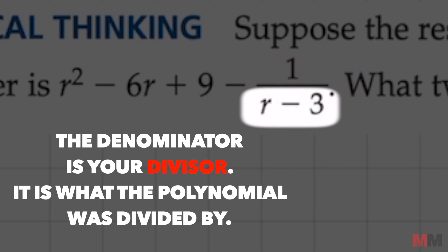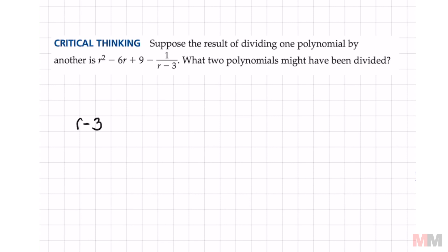So that's actually one of the answers that usually goes outside right here when you do long division of polynomials. Then we're given the quotient, which is this whole thing right here. And we can write that on the top as r squared minus 6r plus 9,